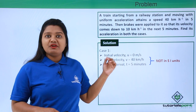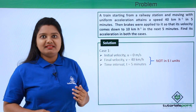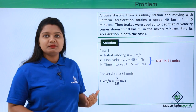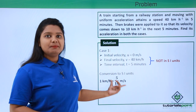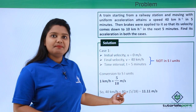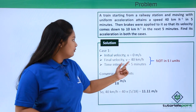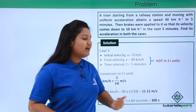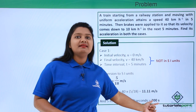These quantities are not in SI units, so our first step is converting them. We know that 1 kilometer per hour equals 5/18 meters per second. So 40 kilometers per hour equals 40 multiplied by 5/18, which is 11.11 meters per second. Also, 1 minute equals 60 seconds, so 5 minutes equals 5 multiplied by 60, which is 300 seconds. Both velocity and time are now in SI units — meters per second and seconds respectively.